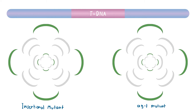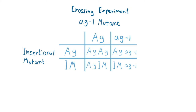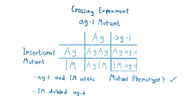Thus, it was likely that the T-DNA had inserted in or near the Agamous gene. But they had to confirm this via crossing the insertional mutant with the Ag1 mutant. If the gene affected by the T-DNA insertion was an allele of Agamous, then 25% of the progeny would have the mutant phenotype, as mutations are recessive. This was the case. Thus, Ag1 and the insertional mutant were allelic, and the insertional mutant was dubbed Ag2.